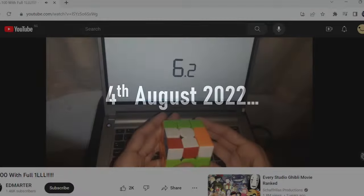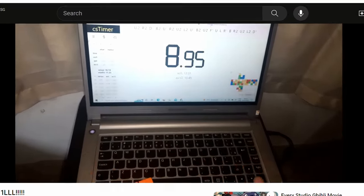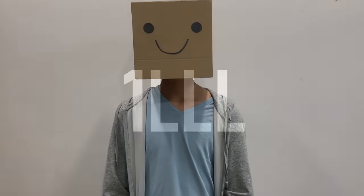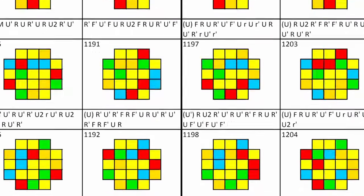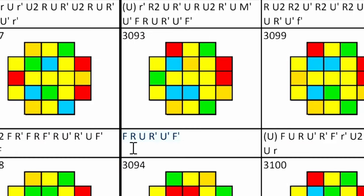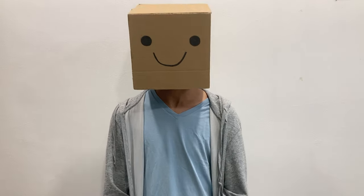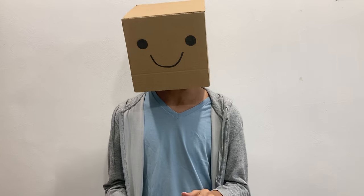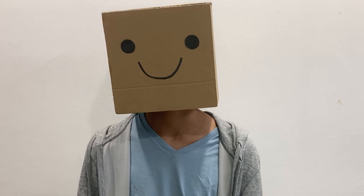In August of 2022, a YouTuber by the name of Ed Martha posted an average of 100 solves with full one-look last layer, making him the first ever person in history to learn all 3916 last layer algorithms. The shortest of these is number 3093, at just 6 moves long. But do any shorter algorithms actually exist? Well the obvious answer is yes, because I found a few algorithms so short that you can't even use move count to compare them anymore.